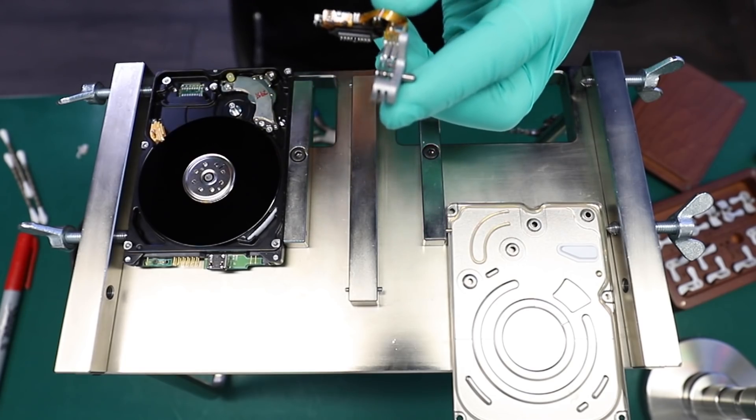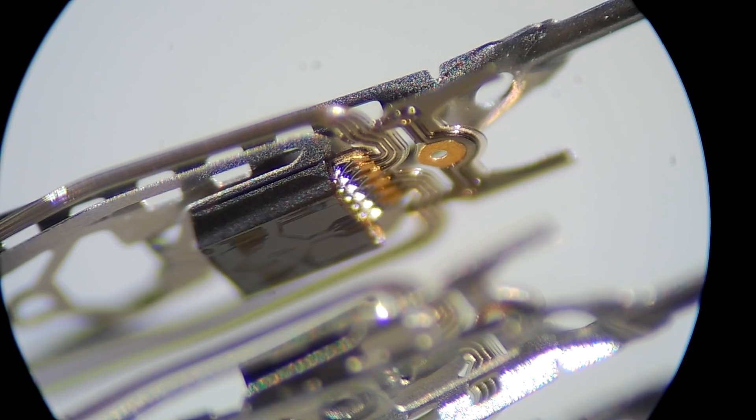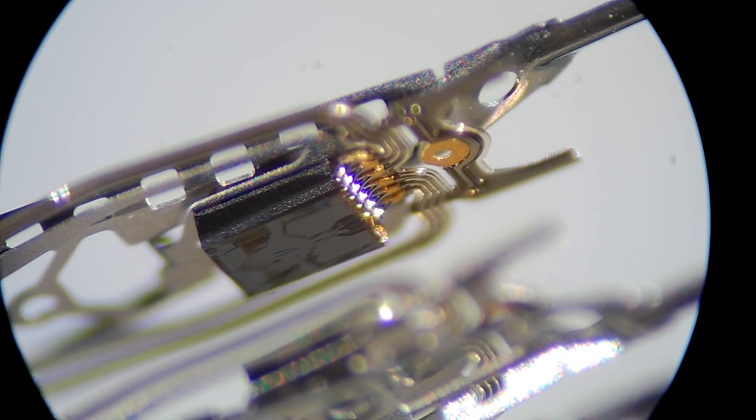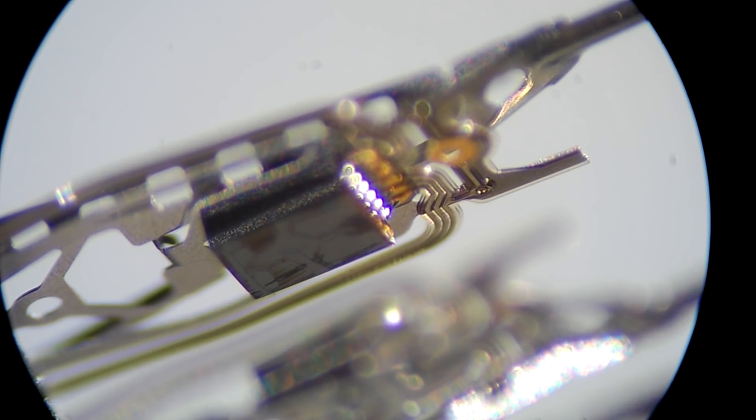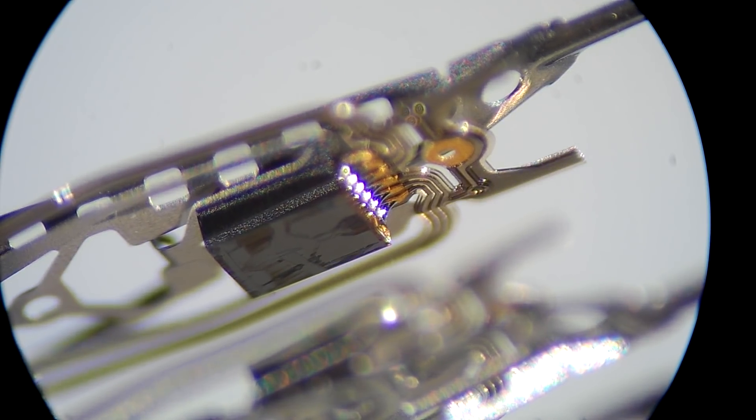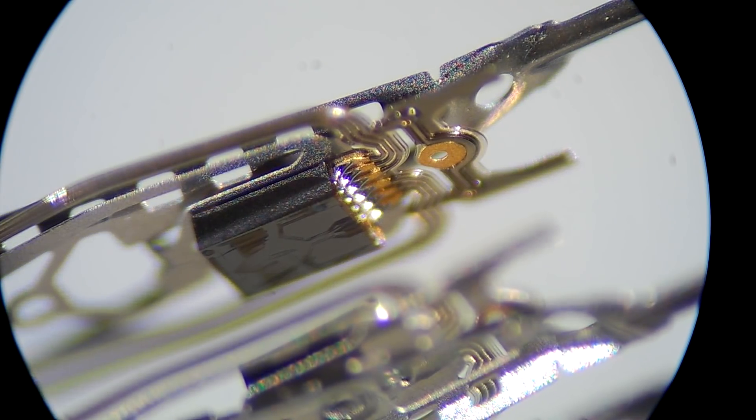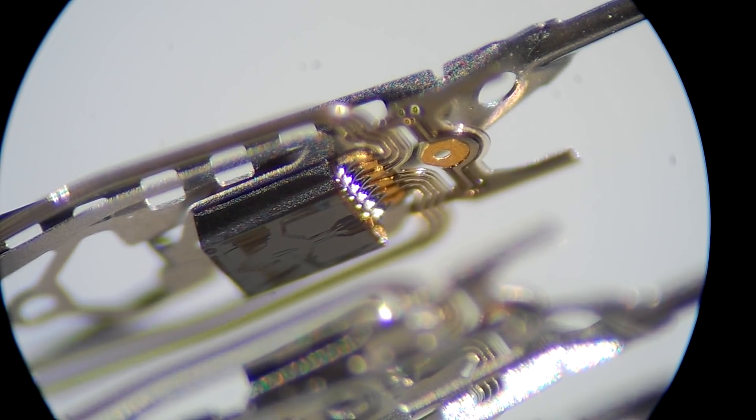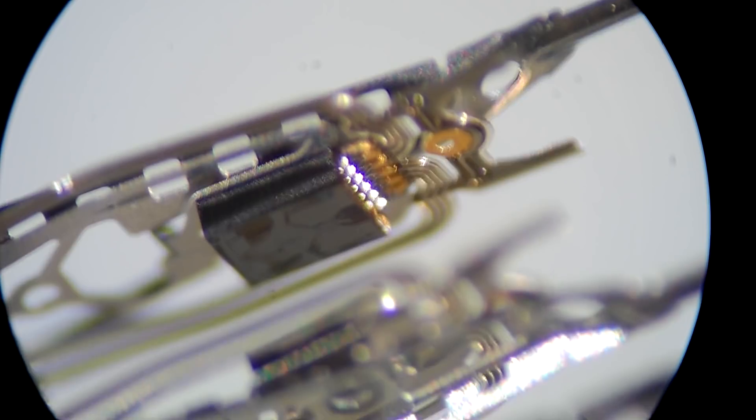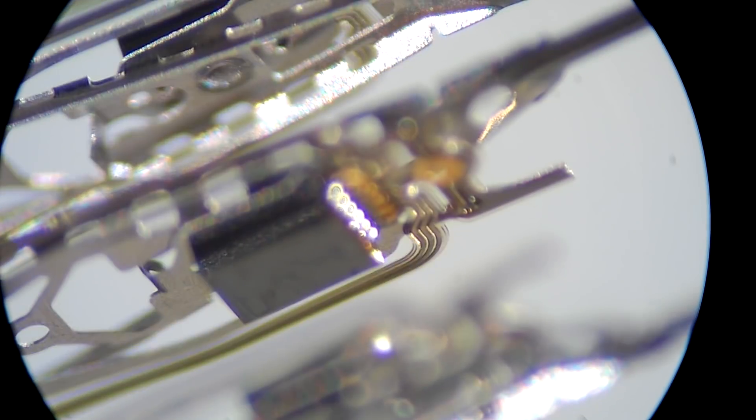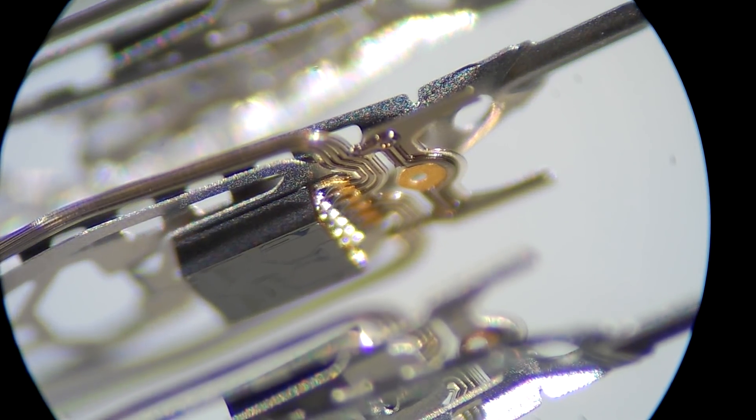The condition of platters will be explained by what head assemblies look like if the drive comes in sealed. But when the drive comes in open, we don't know what the head assembly is going to look like. When we get a drive from another data recovery shop, we don't even know if that head assembly is original or not.